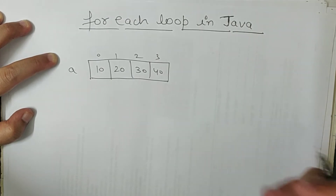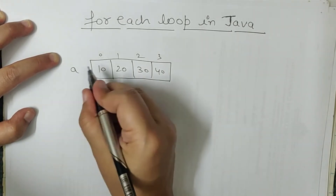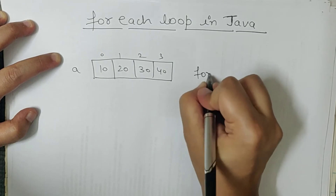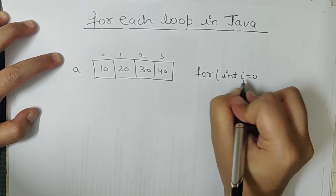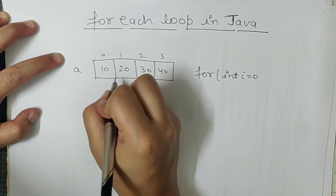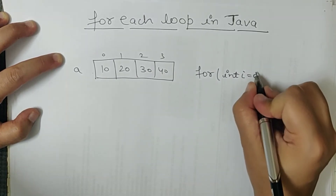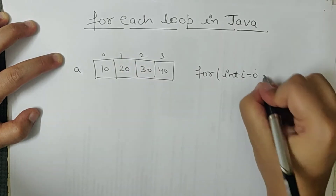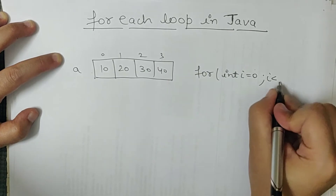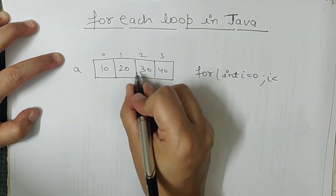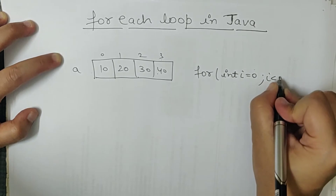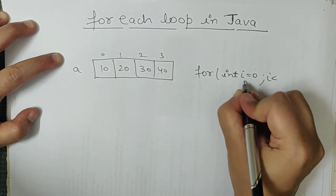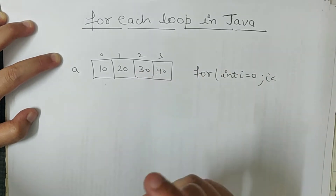For loop ke andar initialization hota hai, condition hota hai, aur increment ka option hota hai. For loop mein aisa kar sakti hoon ki mein sirf pehli do values ko print karaun, because I have this option. Suppose int i equal to zero, matlab mein chahti hoon ki i zero se start ho. Agar mein i equal to one likhun to loop 20 se start hoga. Aur phir i less than three tak chalaye ya two tak — starting aur ending dono meri marzi se hoti hai.